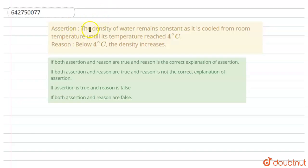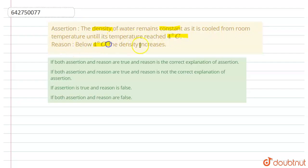Assertion: the density of water remains constant as it is cooled from room temperature until its temperature reaches four degrees Celsius. Reason: below four degrees Celsius, density increases. So this is an assertion-reason question and we have two statements, which we will discuss one by one.